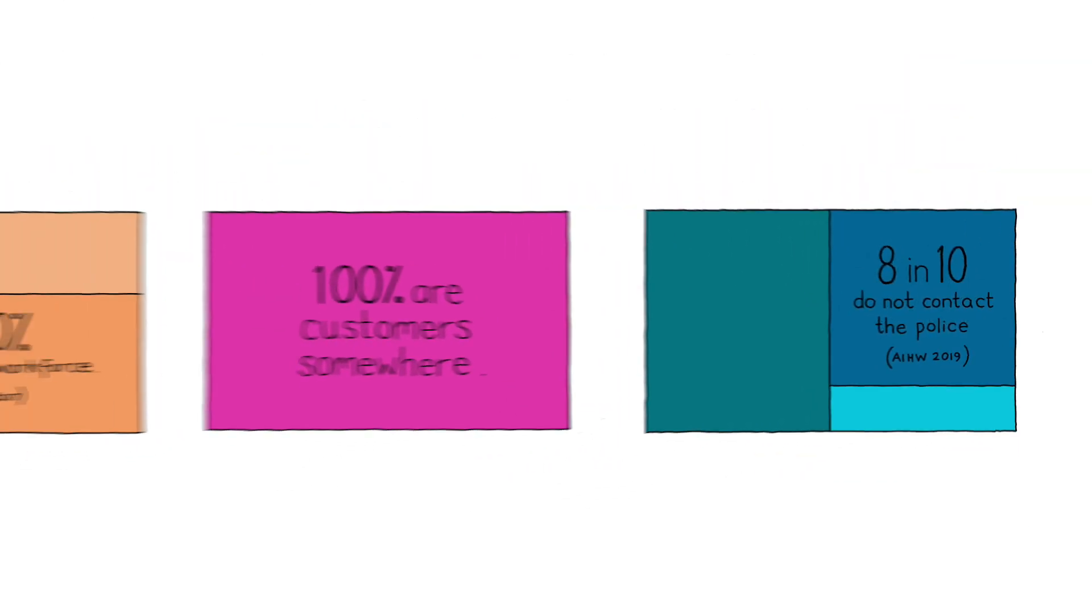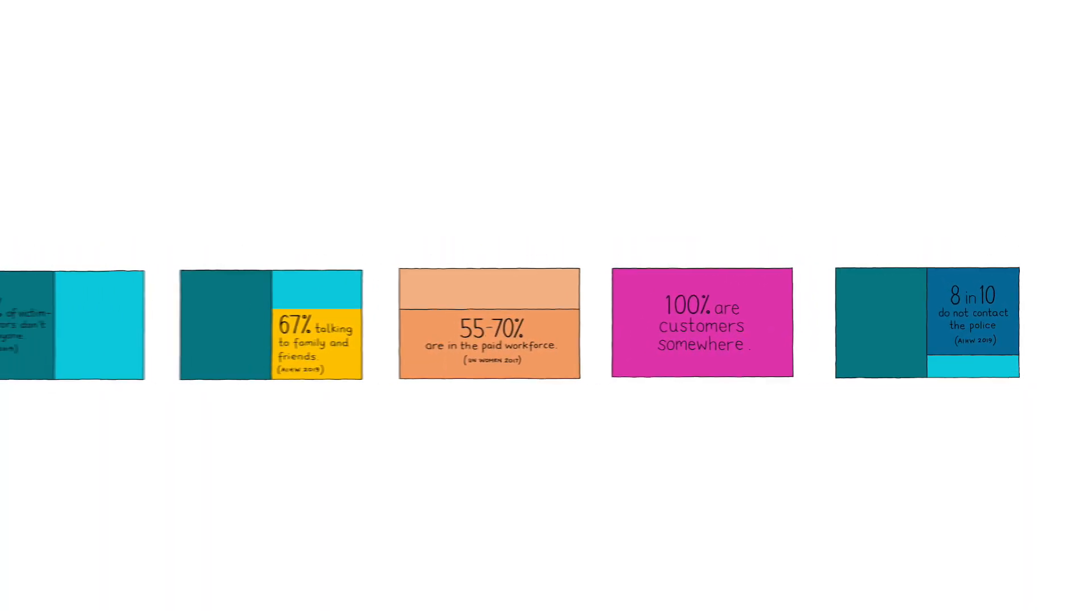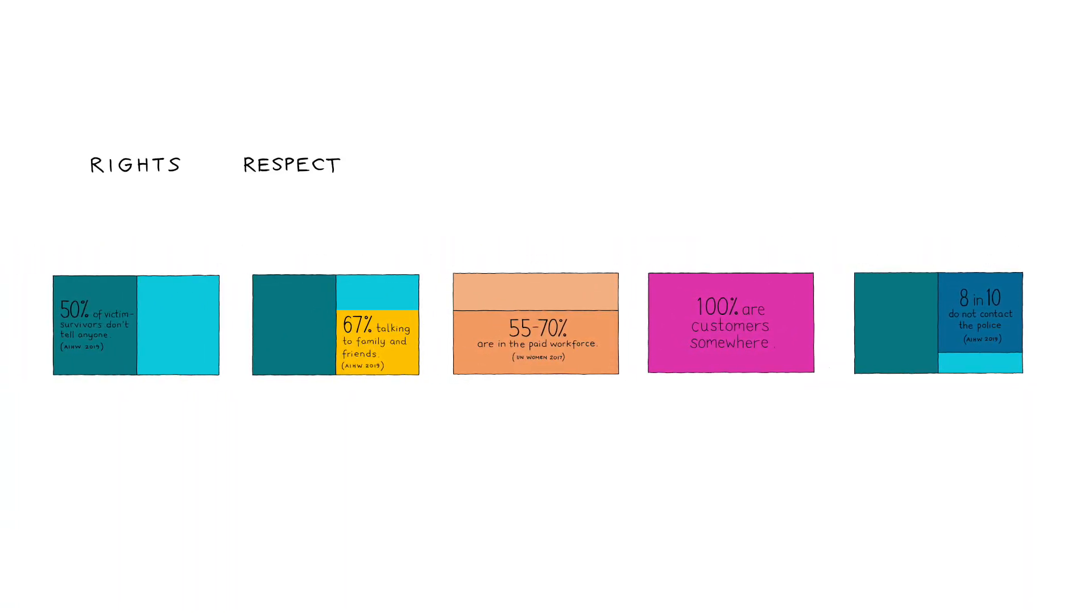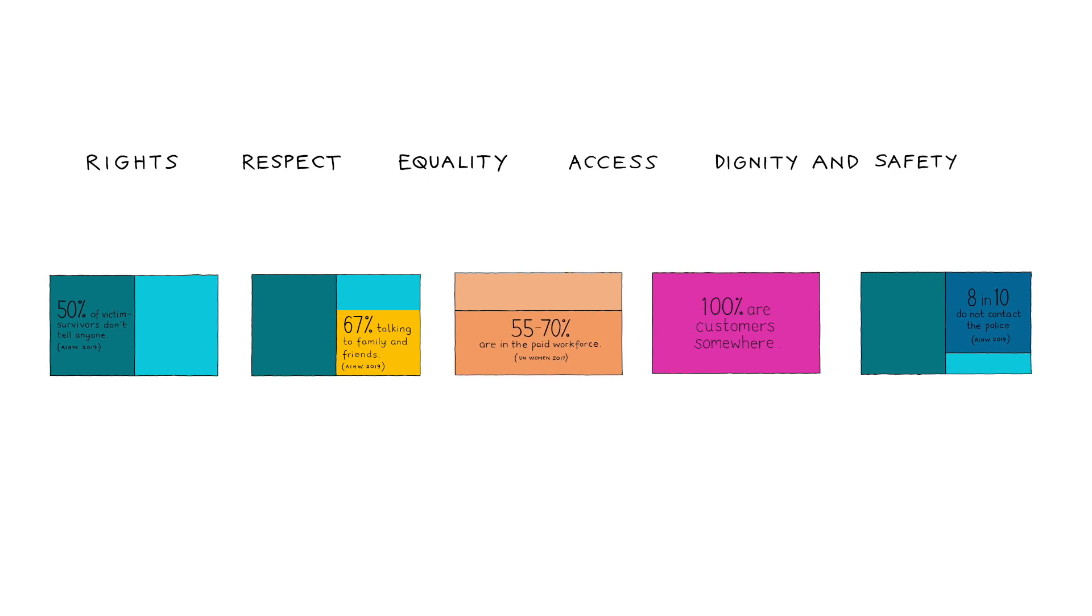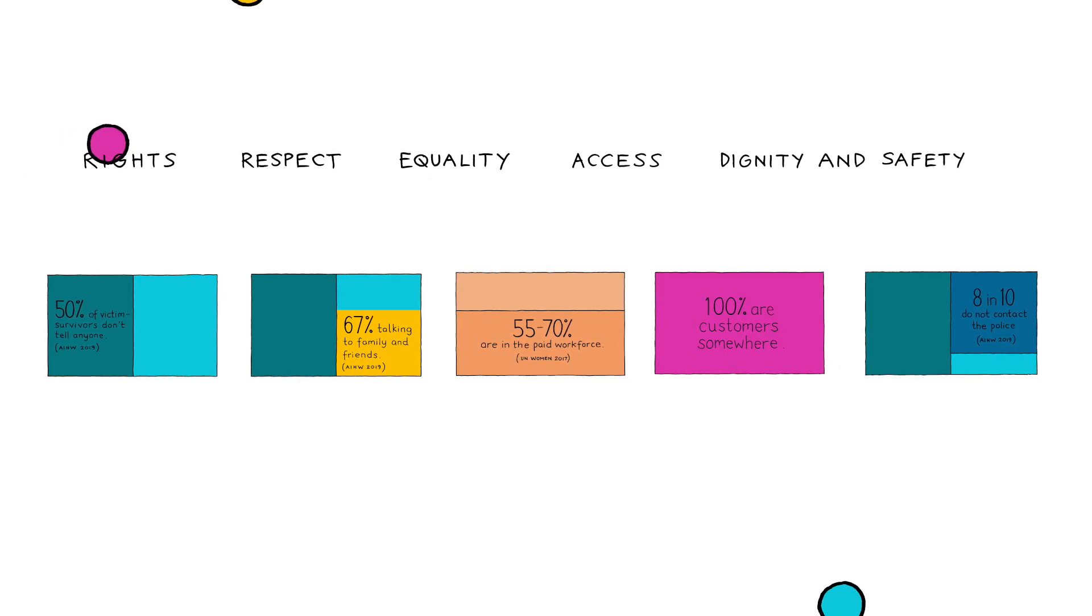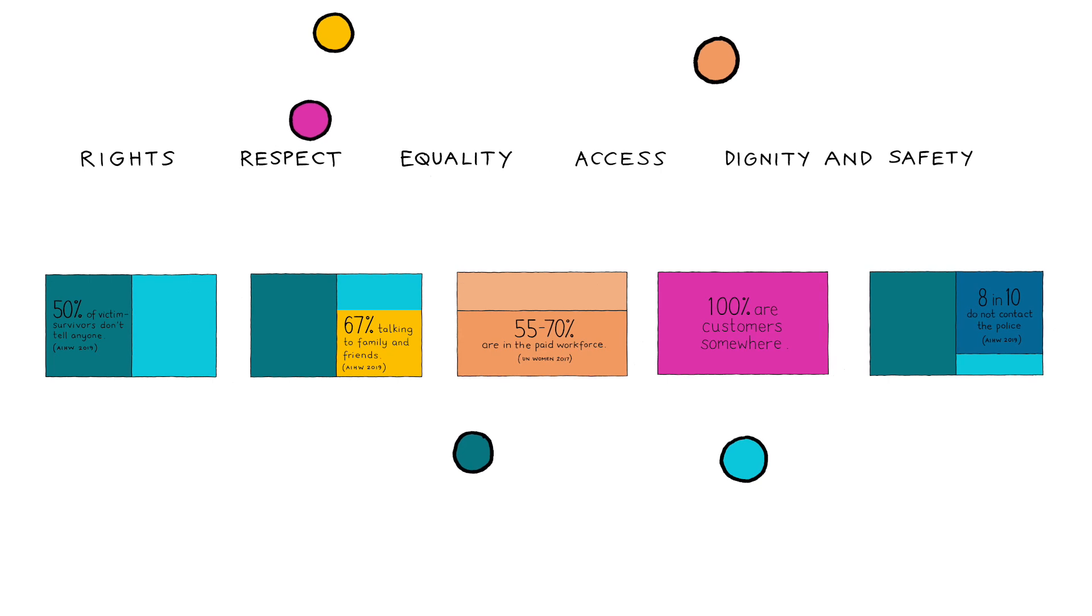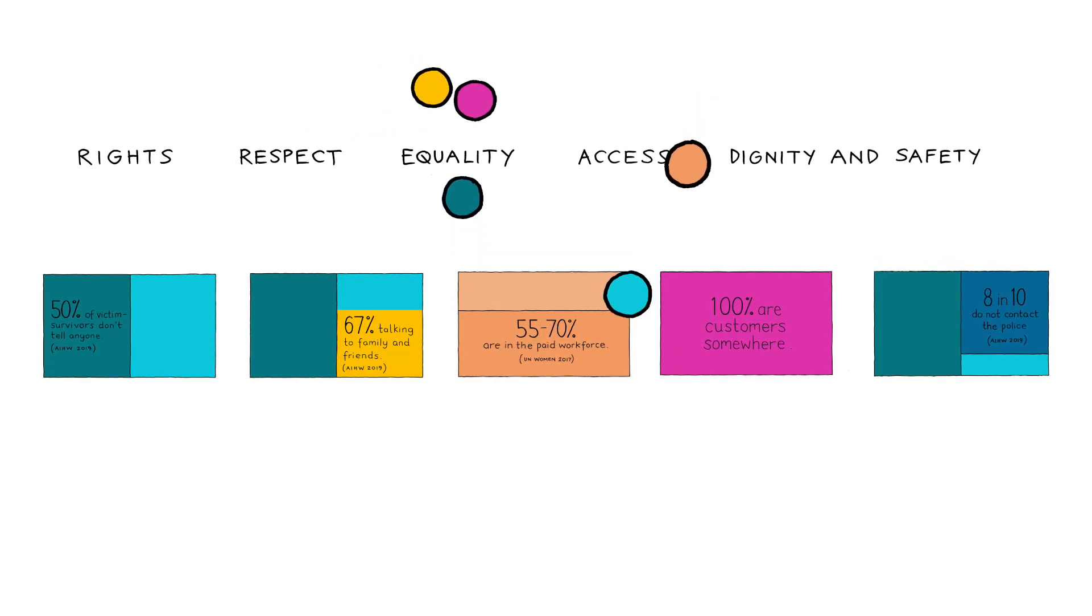Many victim survivors are weighing up whether to reach out to someone. Rights, respect, equality, access, dignity and safety are all elements contributing to if, how and where a person might reach out for support.